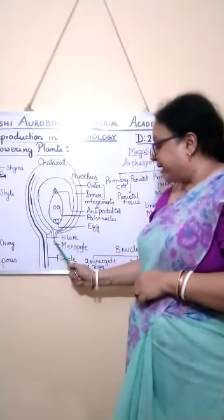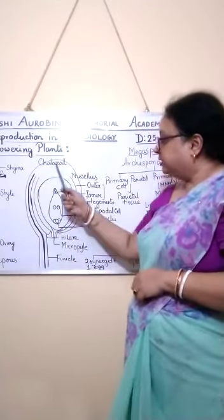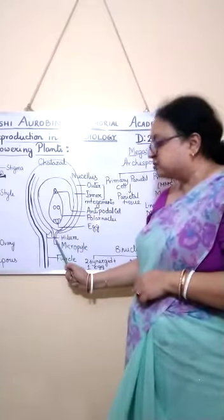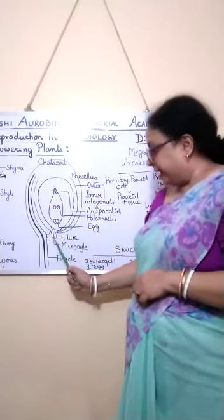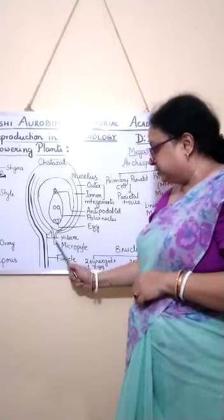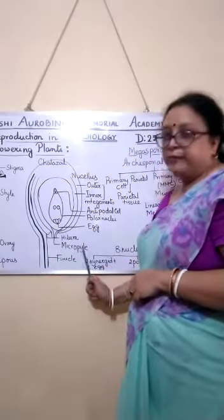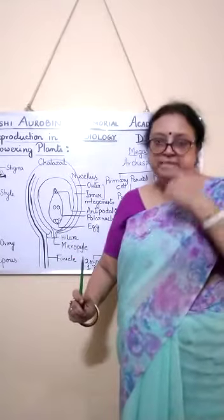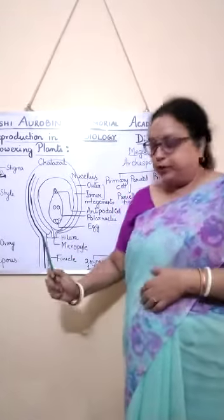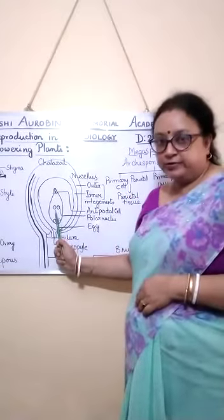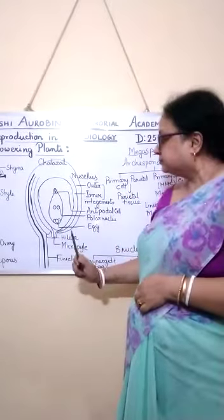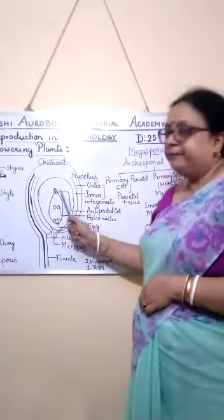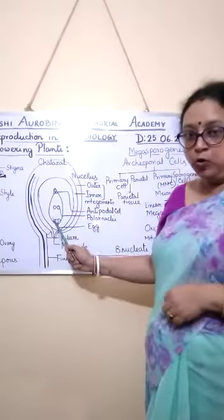On the back side, the opposite side of the chalaza, one very small pore is present. This pore is known as the micropyle. Through this pore, during fertilization, the pollen tube enters into the embryo sac. This is the structure of the ovule.